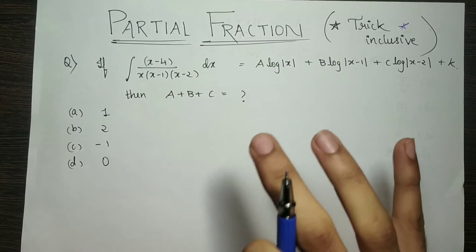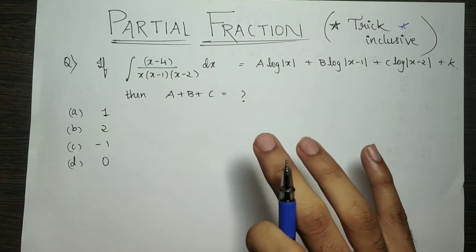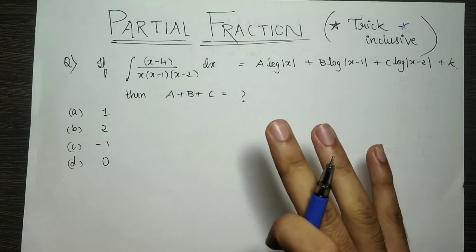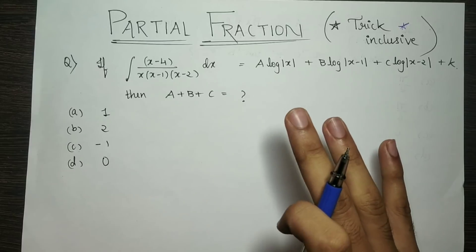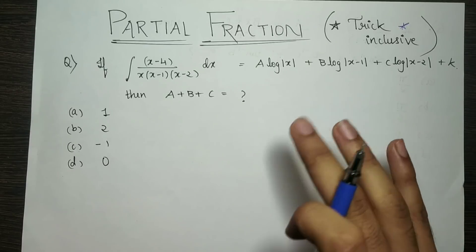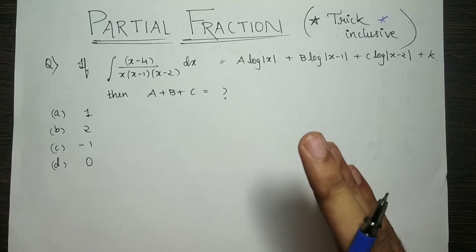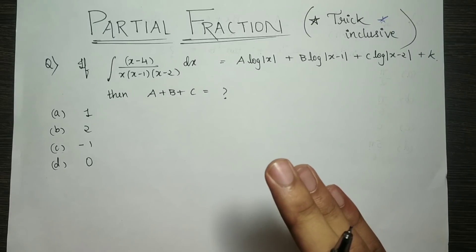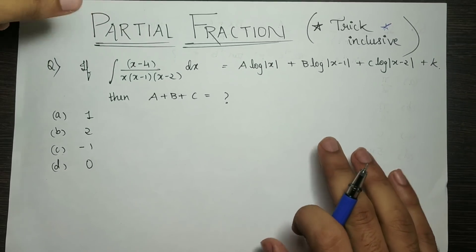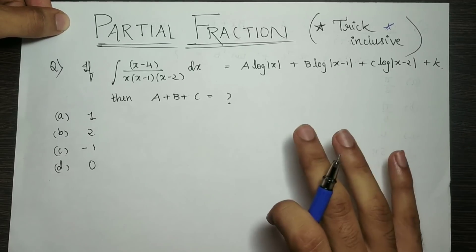So, if you first use the original method, then you will also use the Partial Fractions method. If you want to use the trick, then you will skip ahead. The first question is a direct question — you will also use the theory.